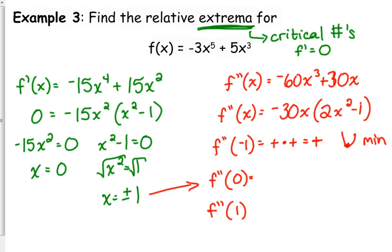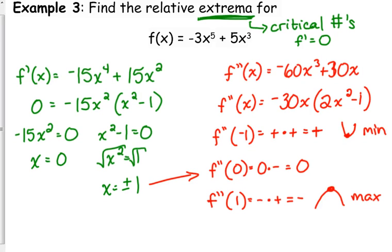When we plug in 0, we get 0 times something, which is 0. There's a note about the second derivative test: if your second derivative also equals 0, then the second derivative test fails — you have to use the first derivative test to determine whether 0 is a maximum or minimum. So we can't do that one yet. Plugging in 1 gives a negative times a positive — that's negative — so it's concave down, which is a maximum.